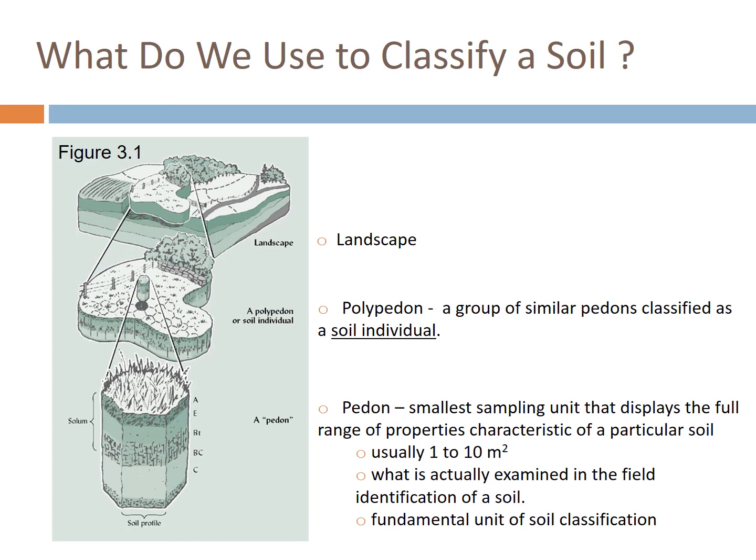We classify soil because there are different properties in soil as we move across the landscape and across depths that are really important for management decisions. In a particular landscape there are different land positions: the summit, the back slope, the toe slope, and the floodplain — don't ever build a house in a floodplain. All of these give rise to different soils. As we go through a soil profile, we look at a poly pedon, which is a group of similar pedons classified as a soil individual. We're going to pull out one individual soil unit, six feet in depth, and classify it — and that's what we'll do in lab this week.